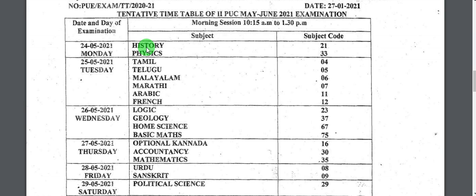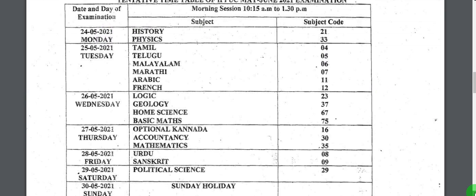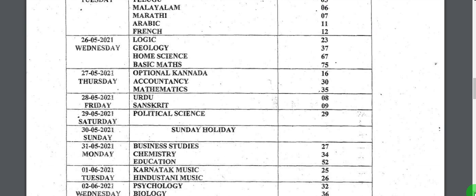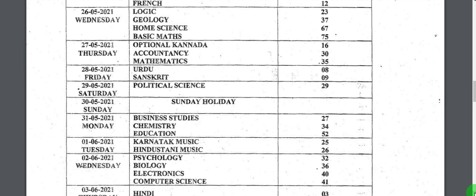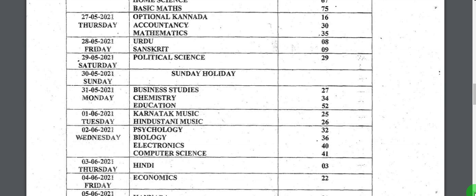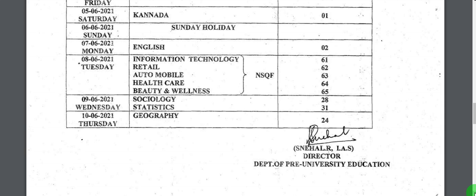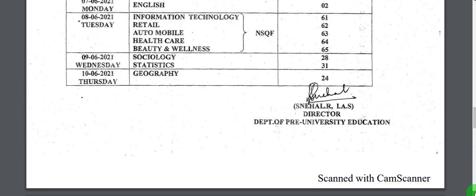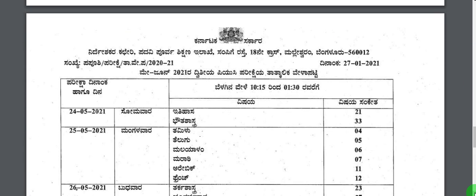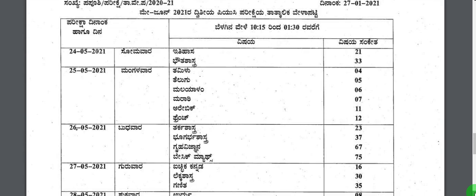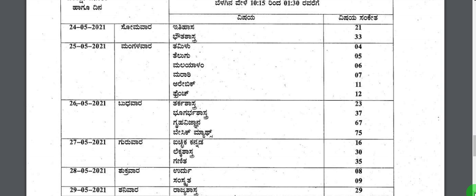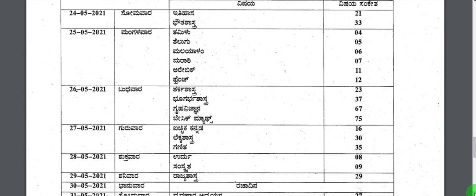The first subject will be History and Physics, which will be on 24th May. From 24th till June, you can note down the subjects as well as the timetable. Till 10th of June you will be having the examination. You can also see the Kannada version of the timetable — note down the date and time.